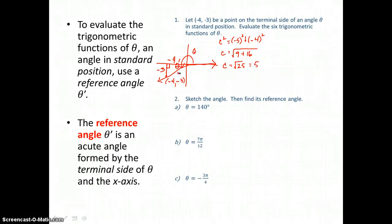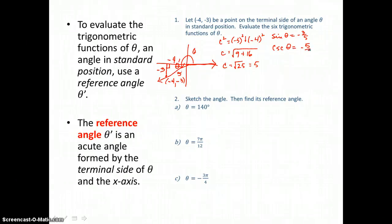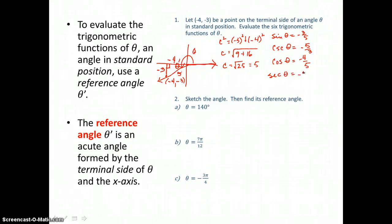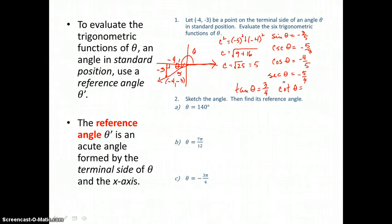The hypotenuse is always positive, and in this case it has length 5. So now we can find the six trig functions. Sine of theta equals opposite over hypotenuse, or negative 3 fifths. Cosecant of theta equals hypotenuse over opposite, or negative 5 thirds. Cosine of theta is adjacent over hypotenuse, so negative 4 fifths. Secant of theta is hypotenuse over adjacent, negative 5 fourths. Tangent of theta is opposite over adjacent, negative 3 over negative 4, which is positive 3 fourths. And cotangent of theta is adjacent over opposite, negative 4 over negative 3, which is positive 4 thirds.